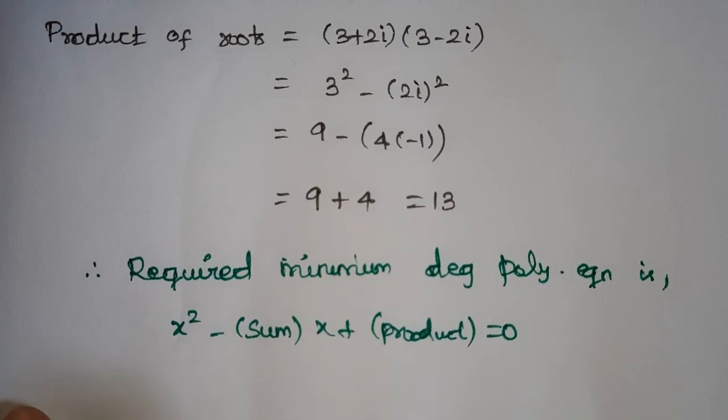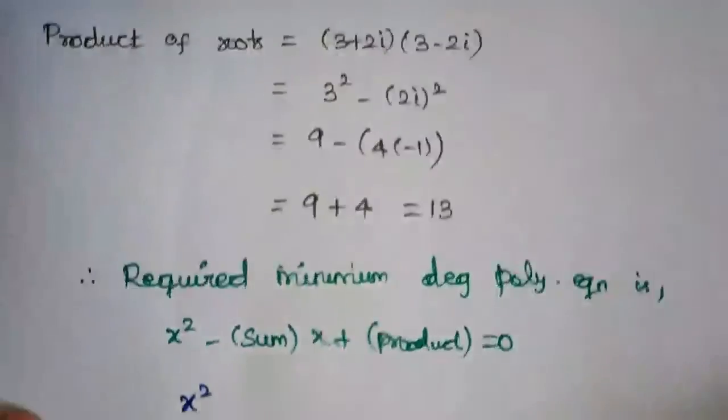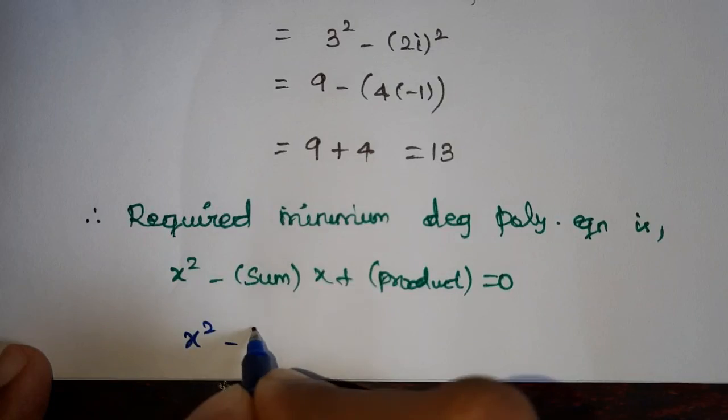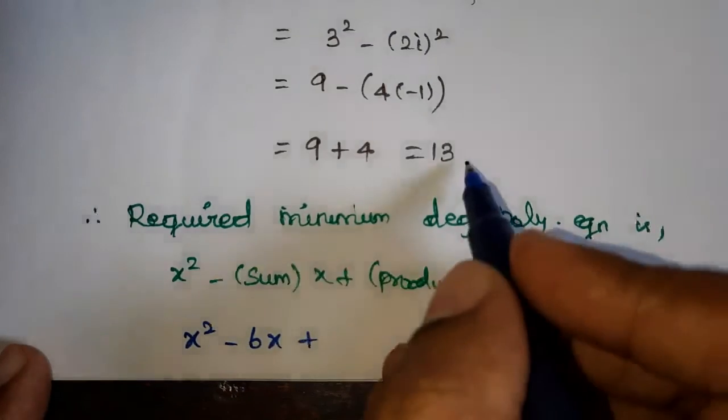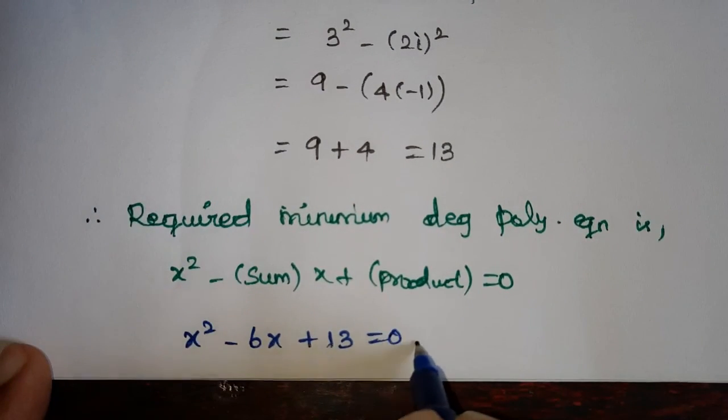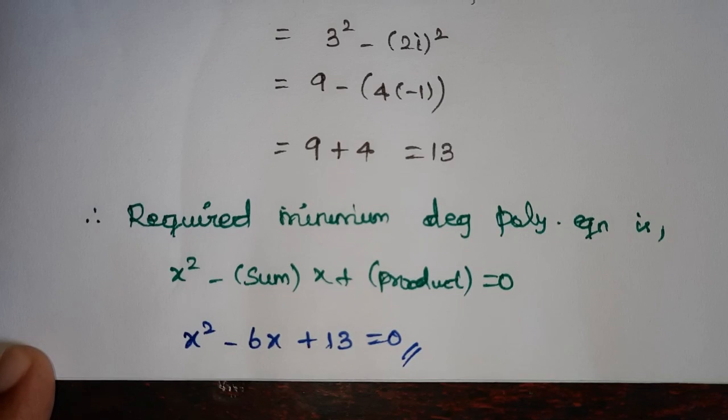Hence, the equation is x square minus 6x plus 13 equals 0, which is the required polynomial equation.